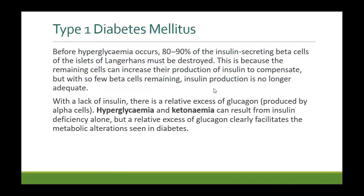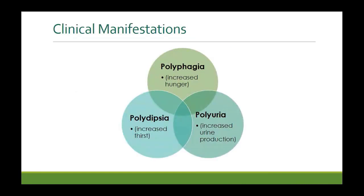This imbalance leads to hyperglycemia and ketonemia. Ketonemia occurs because although there is a lot of glucose in the blood, it cannot enter the cells. Cells are living in a glucose-deficient environment, so metabolism shifts to lipids and fatty acids, leading to production of ketone bodies or keto acids. This is called ketonemia, and the situation worsens with the relative excess of glucagon on top of insulin deficiency.